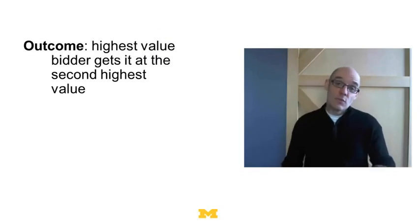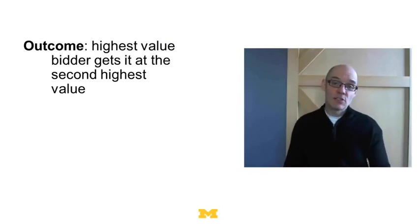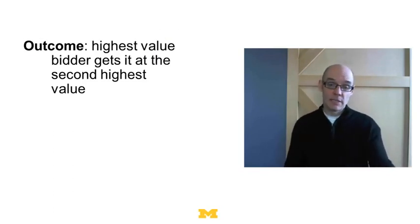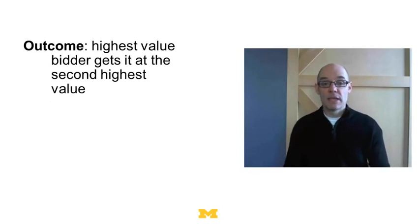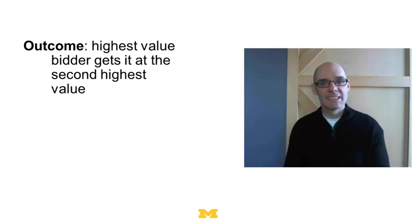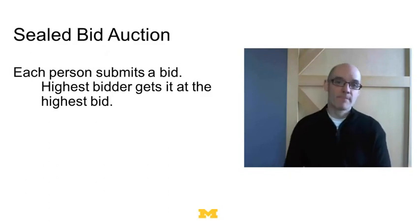So what's going to happen in this auction? The outcome goes to the highest valued bidder, and that person pays the second highest price — the exact same result we got in the ascending bid auction.